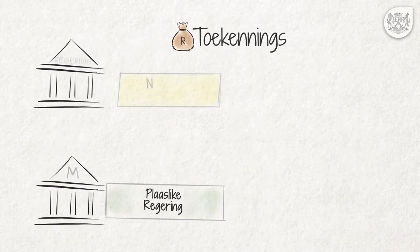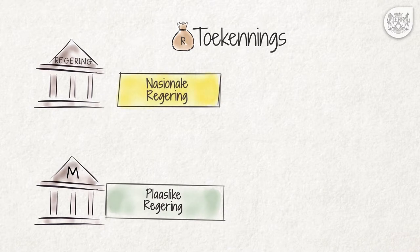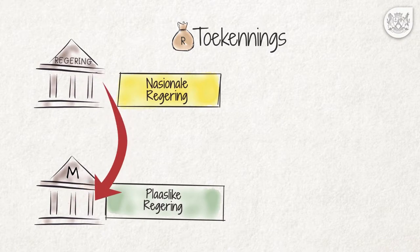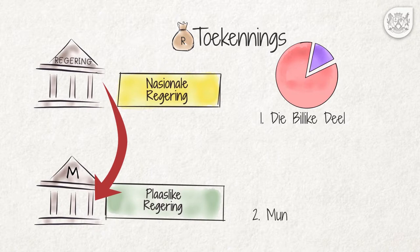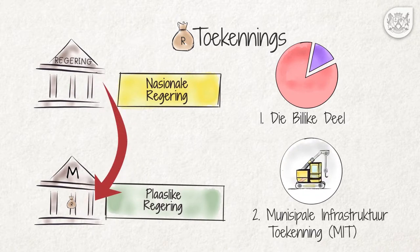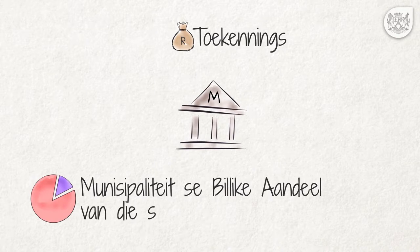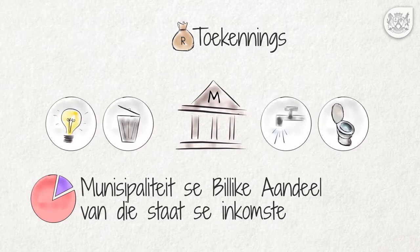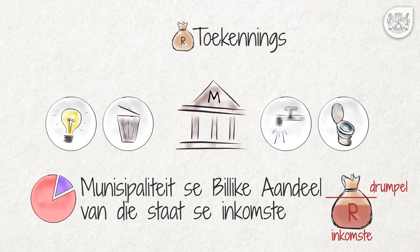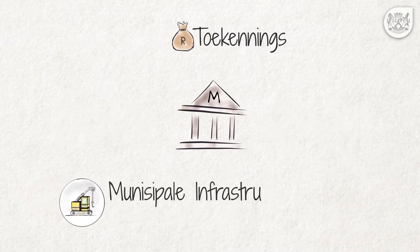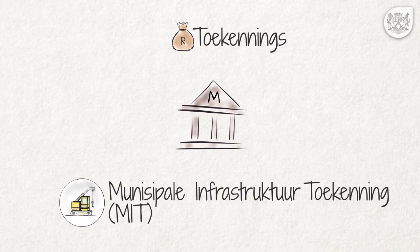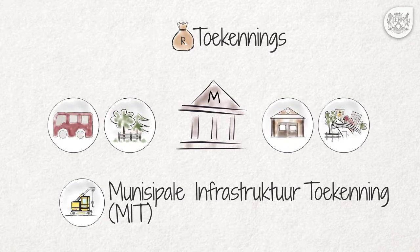Toekennings. Alle munisipaliteite ontvang geld in die vorm van toekennings uit die belastingsinkomste van die nasionale regering. Een sodanige toekenning is die sogenaamde billike deel en die ander is die Munisipale Infrastruktuur Toekenning, algemeen bekend as MIG-fondse. Die billike deel van die munisipaliteit uit die staatsinkomste word deels gebruik om inwoners wie se inkomste minder as 'n bepaalde perk is, te help betaal vir dienste. Die MIG-fondse word gebruik om die koste van basiese infrastruktuur dienste, veral ten bate van arm persone, te help betaal.